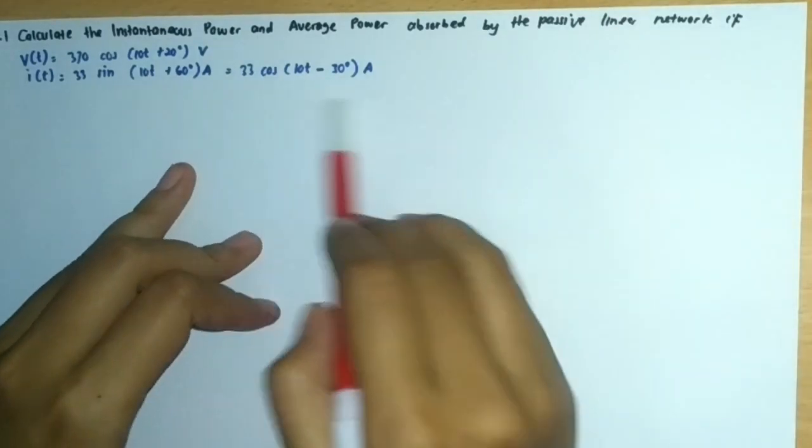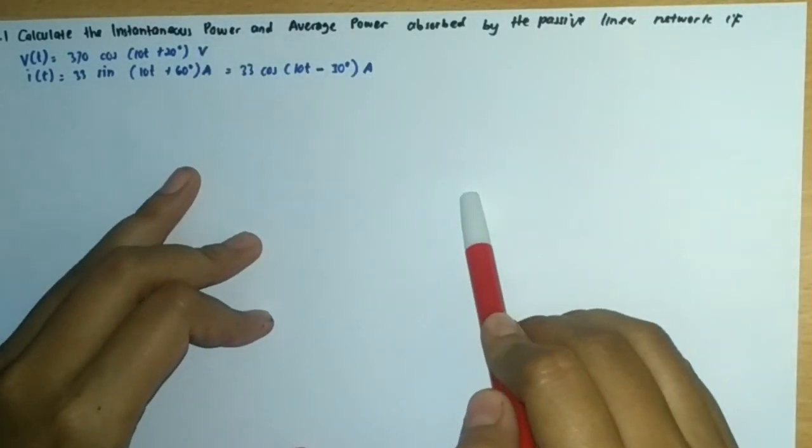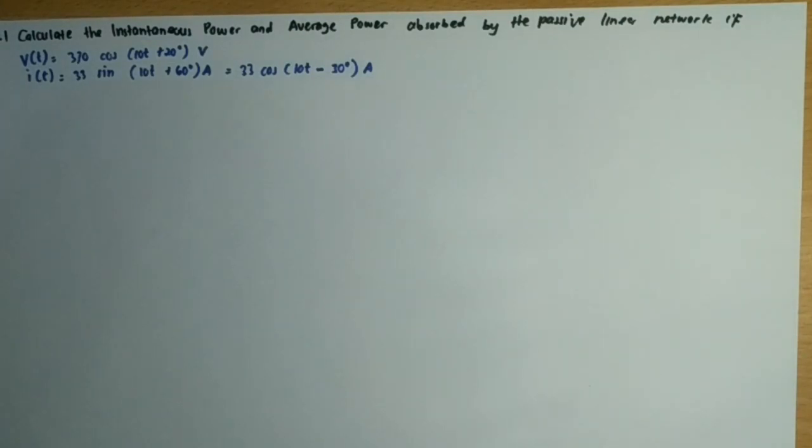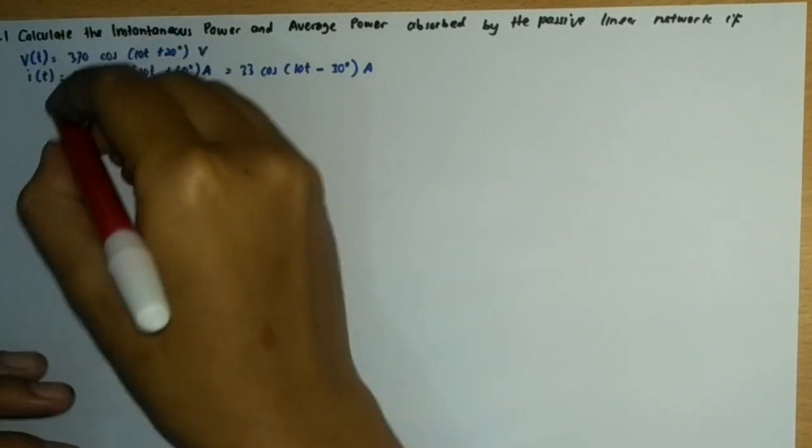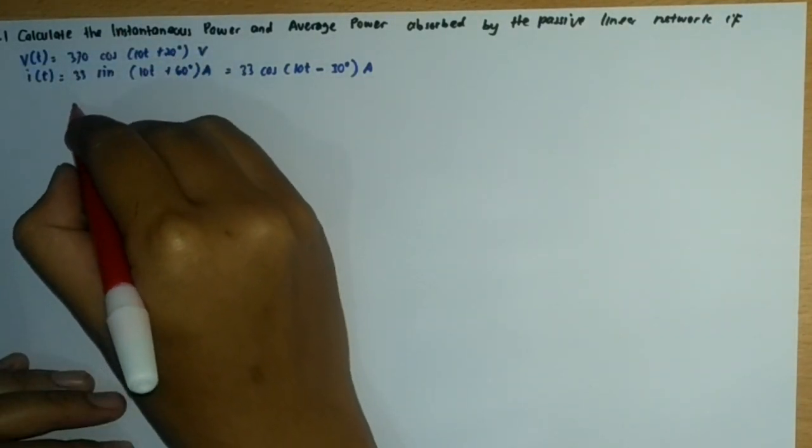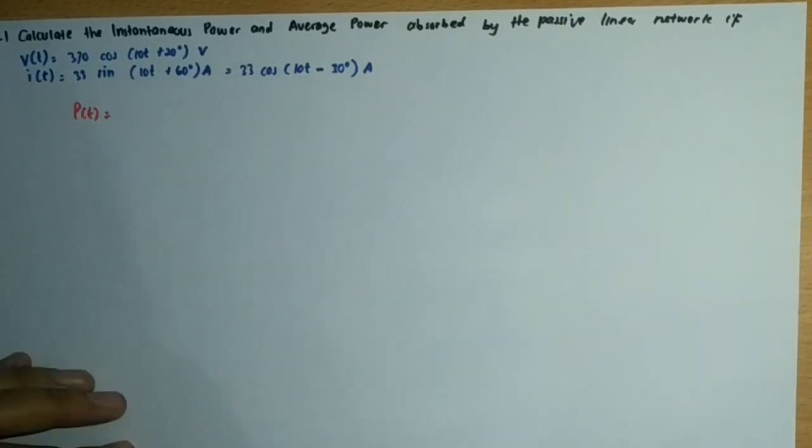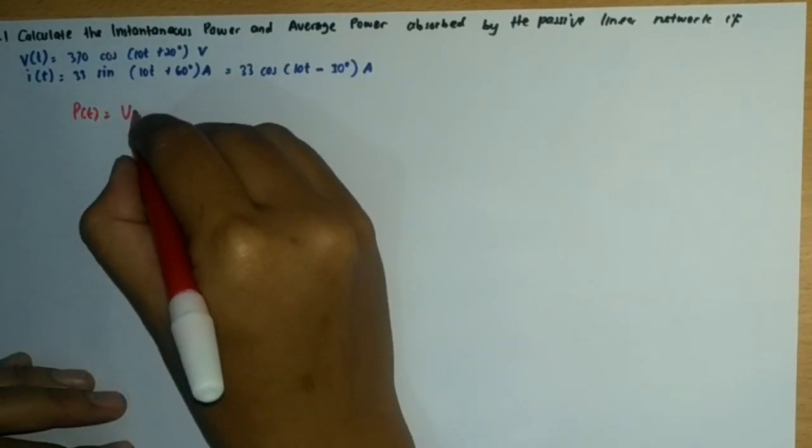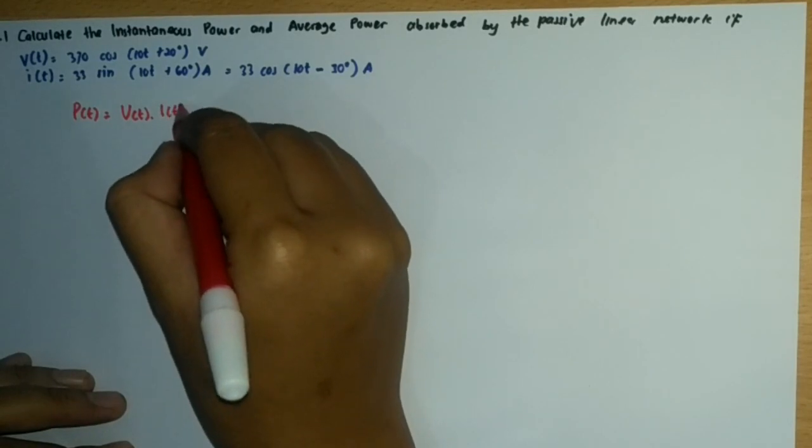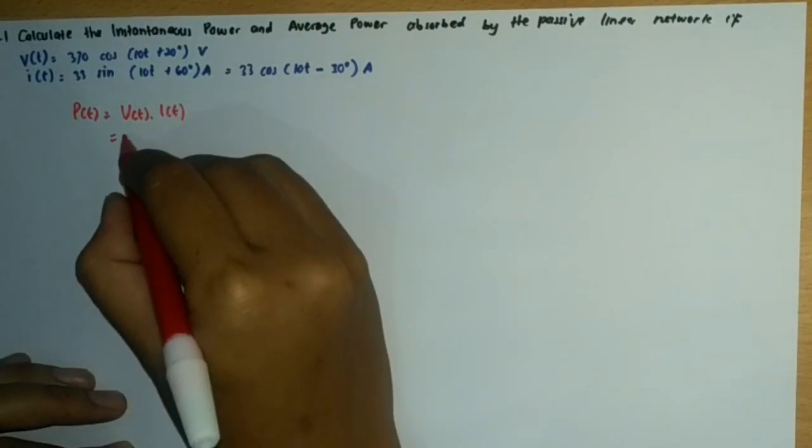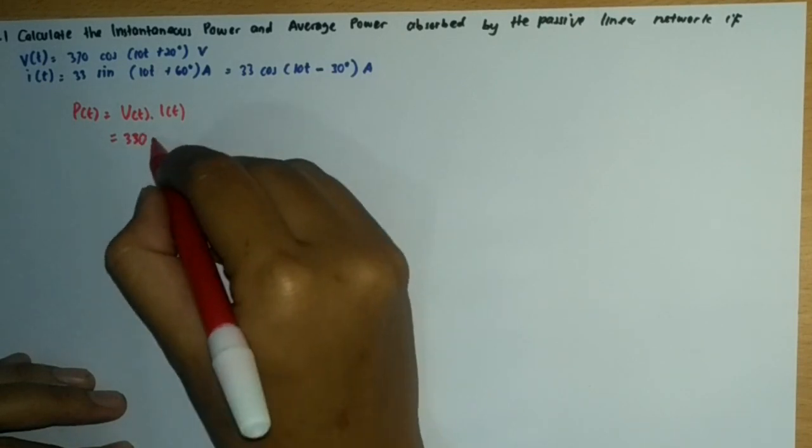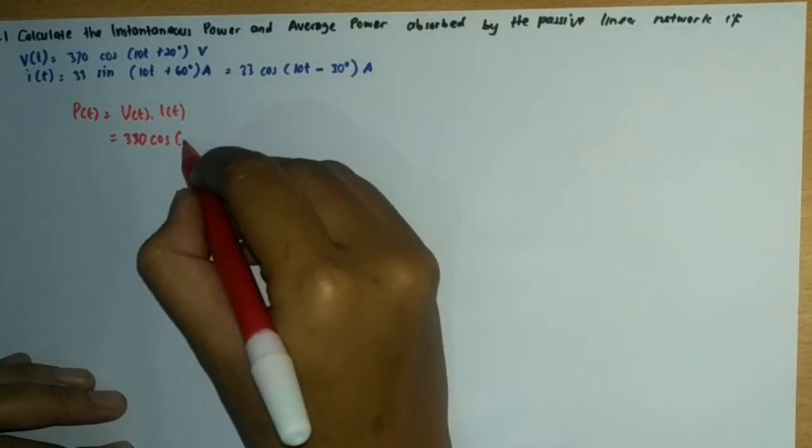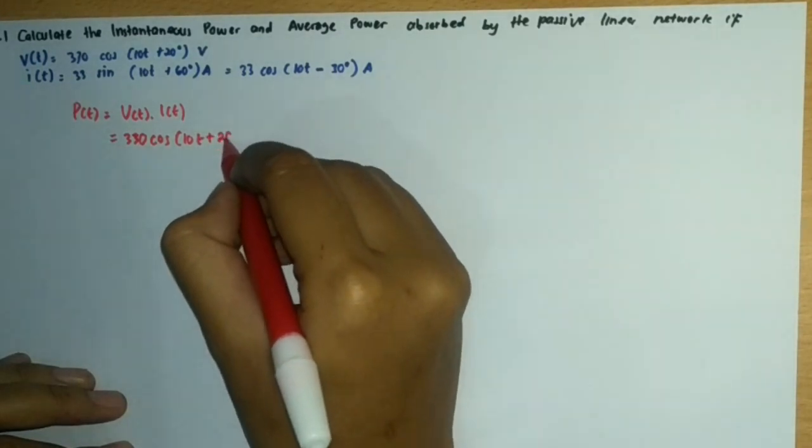We use this equation to make it much easier. For the first equation, the instantaneous power is the power at any instant of time. We can write this as P(t) = V(t) multiplied with I(t), which is P(t) = 330 cos(10t + 20°) times 33 cos(10t - 30°).